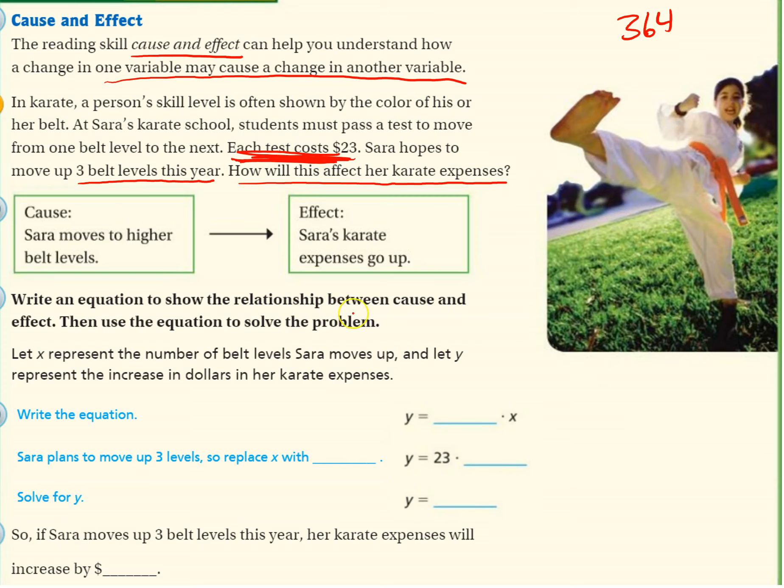Write an equation to show the relationship between cause and effect, then use the equation to solve the problem. Let X represent the number of belt levels Sarah moves up, which we know is going to be 3 in this case. And let Y represent the increase in dollars in her karate expenses.